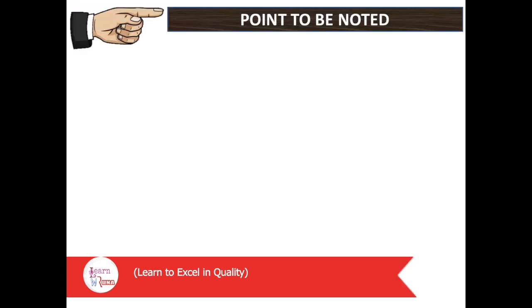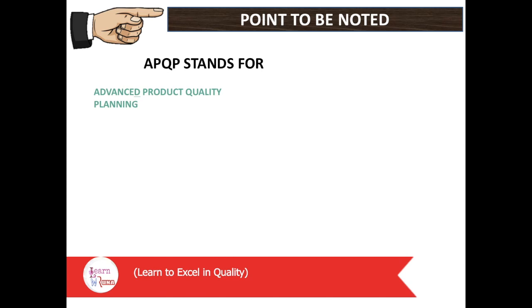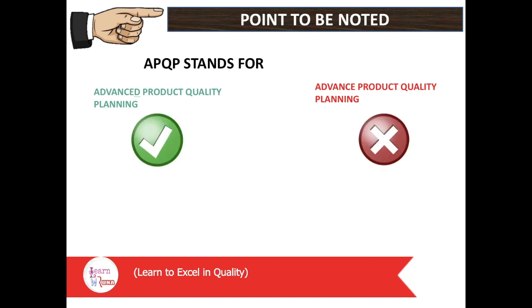So let's see — this is a very important point and you have to always focus on it. The APQP full form is Advanced Product Quality Planning. So how many people said Advanced Product Quality Planning? It's called Advanced Product Quality Planning. Tell me in the comment section.